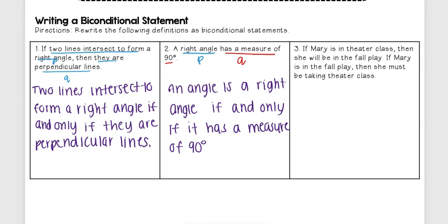With both of these, I could write it in the other order as well. So I can say: an angle has a measure of 90 degrees if and only if it is a right angle. I could go the other direction as well.